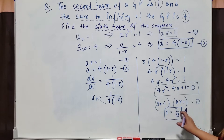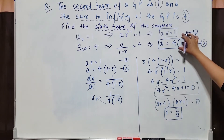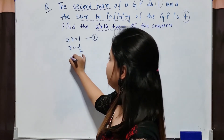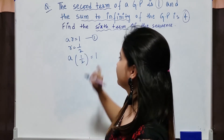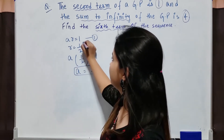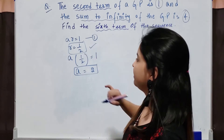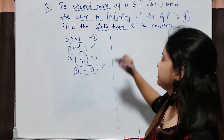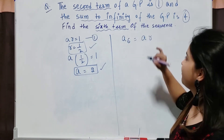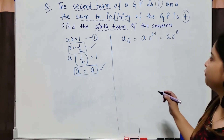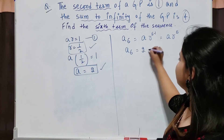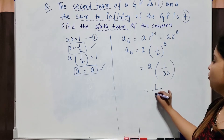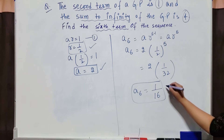Now I have the value of r = 1/2. Substitute this value into equation 1 to find a: a times 1/2 = 1, so a = 2. Now using these two values, I can find the sixth term. A₆ = ar raised to power (6 minus 1) = ar⁵. So a₆ = 2 times (1/2) raised to power 5, which is 2 times 1/32, which is 1/16. So my sixth term is 1/16.